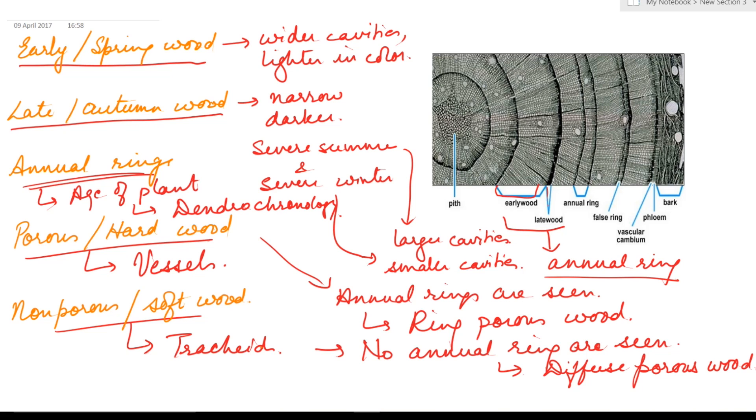So the terms to remember: early and spring wood, late and autumn wood, annual rings, porous or hardwood, non-porous or softwood, ring porous wood and diffuse porous wood.